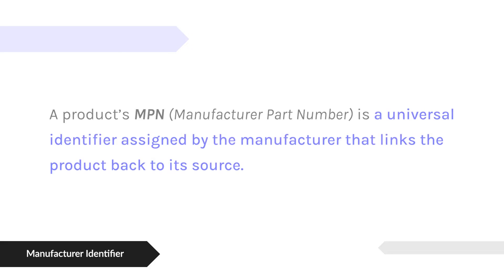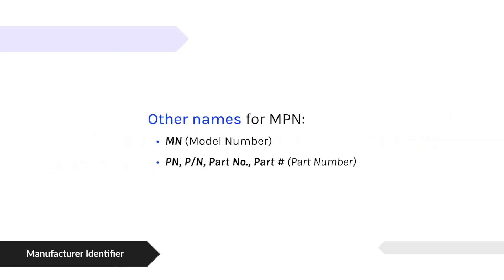Then we come to something that is more defined beyond the seller but not global yet — it's something that the manufacturer assigns, called manufacturer part numbers or MPNs. The MPN is a static identifier of a product which is universal to all distributors, wholesalers, and resellers that a manufacturer has products with. So the MPN links that product across sellers — it's not just unique to one seller, it's unique across sellers.